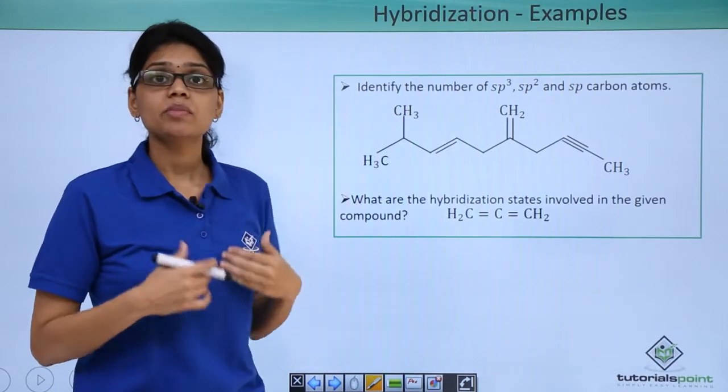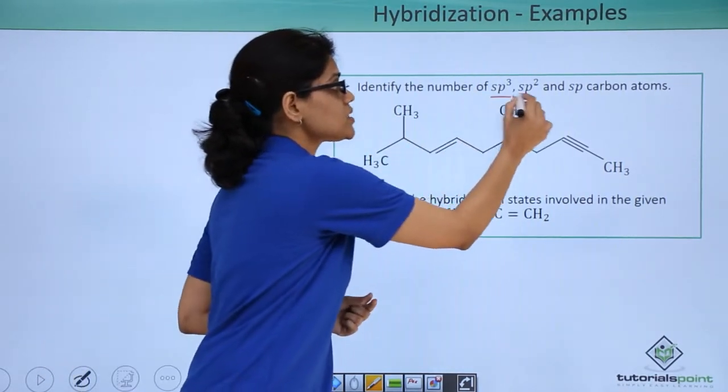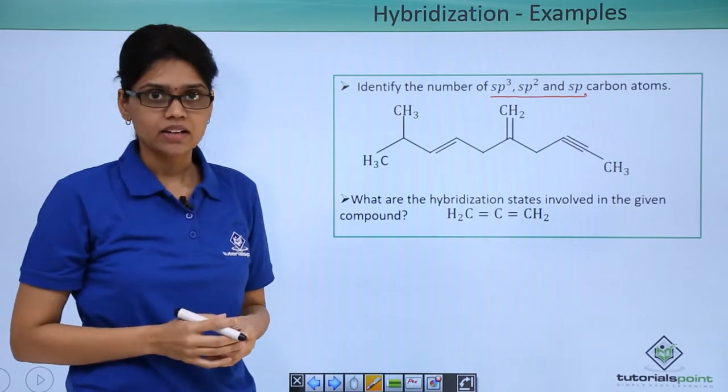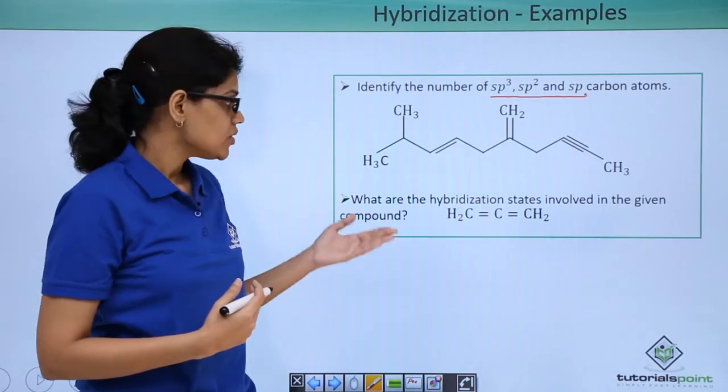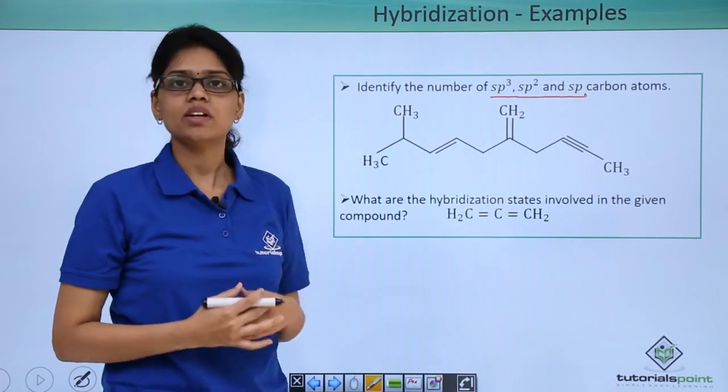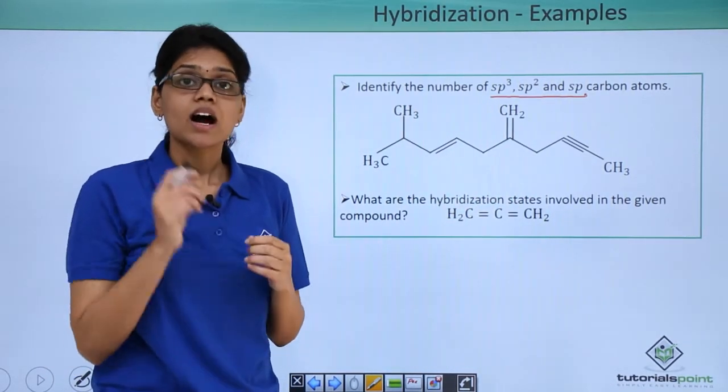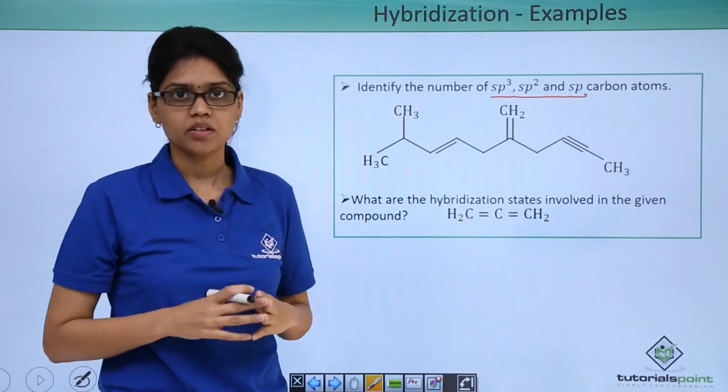So here we have been asked to identify the number of sp3, sp2 and sp carbon atoms in this given structure. In the second question we are asked what are the hybridization states involved in this particular compound. Essentially identify the hybridization of all the different carbon atoms involved here.